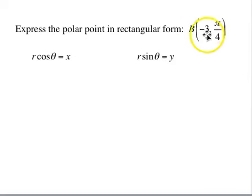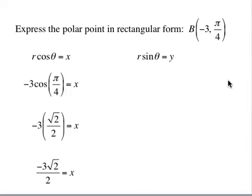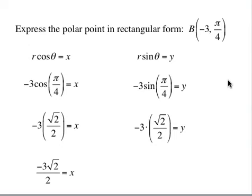Next example: point B is (-3, π/4). π/4 would be in the first quadrant, but the fact that r is negative 3 makes us go backwards — now we're in the third quadrant, so we expect both x and y to be negative. x = r·cos θ = -3·cos(π/4) = -3·(√2/2) = -3√2/2. y = r·sin θ = -3·sin(π/4) = -3·(√2/2) = -3√2/2. Both are negative — indeed a third quadrant point.